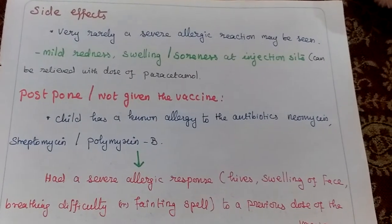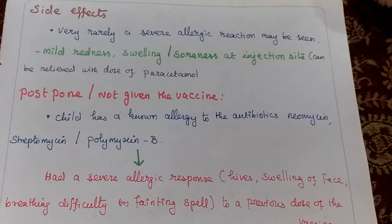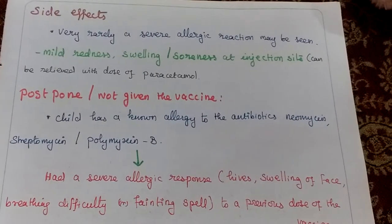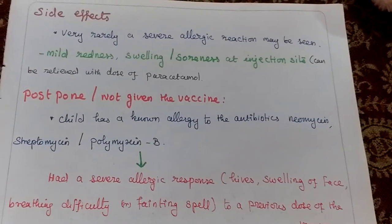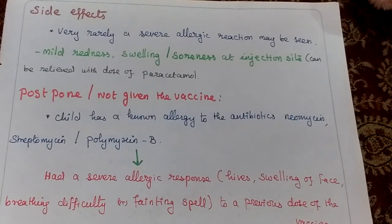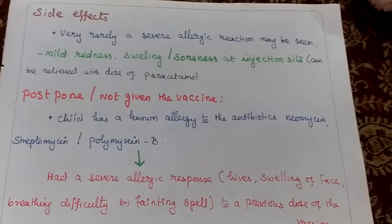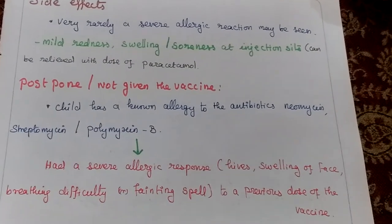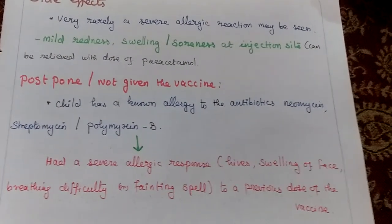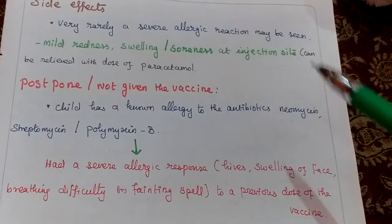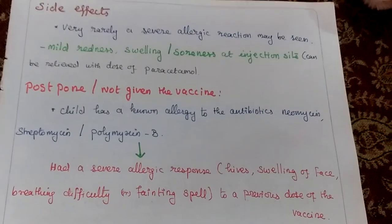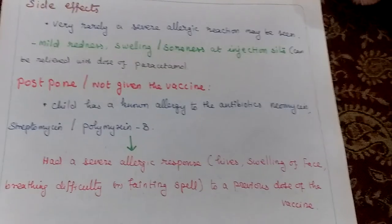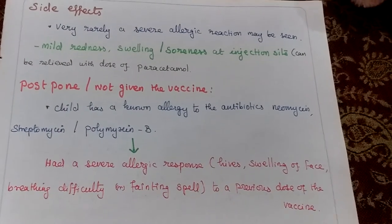If oral polio vaccine was not taken or was postponed, and the child has a known allergy to antibiotics such as neomycin, streptomycin, or polymyxin B, the previous doses were missed. The child may be affected by symptoms such as hives, swelling of the face, and breathing difficulty.